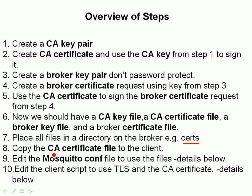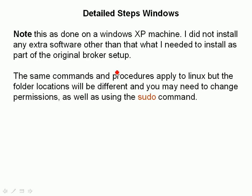Then we copy the CA certificate file to the client — that's all we need on the client. We edit the Mosquitto configuration file to use the files, and we edit the client script to use TLS and the CA certificate. The screenshots I'm showing were done on Windows, but the same applies to Linux — the main difference is you'll probably need to use the sudo command to run the commands.